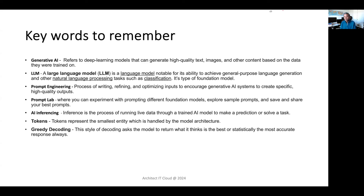And LLM is a large language model. It is a general purpose language model that will be used for generating different types of text, and it can be used for summary, classification, and Q&A. Prompt engineering is the process of writing, refining, and optimizing your Generative AI models. And the prompt lab is the playground where you can pick a model, prompt the model, tune the model, train the model, and so on.